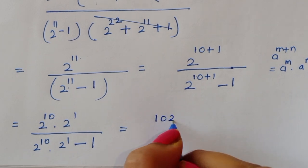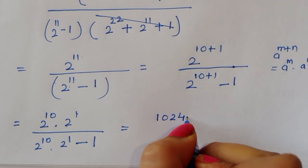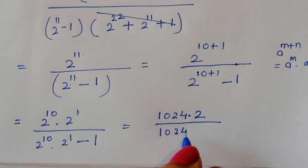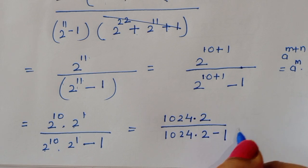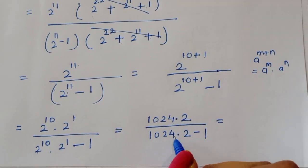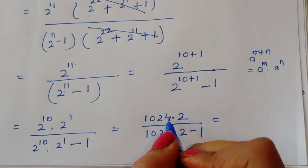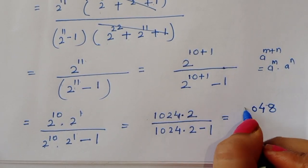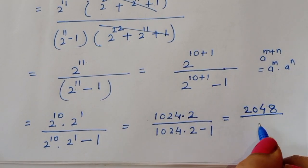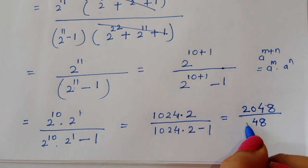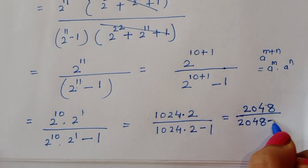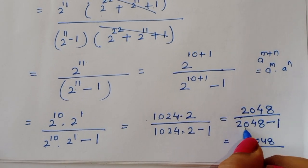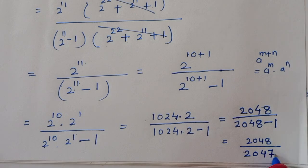The value of 2 power 10 is 1024. So we get 1024 times 2 divided by (1024 times 2 minus 1), which is 2048 divided by (2048 minus 1), that is 2048 divided by 2047. This is the answer.